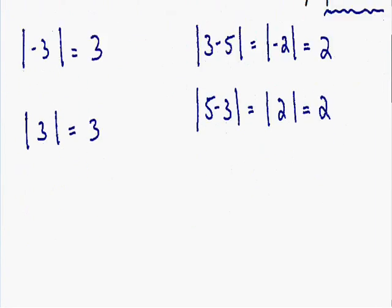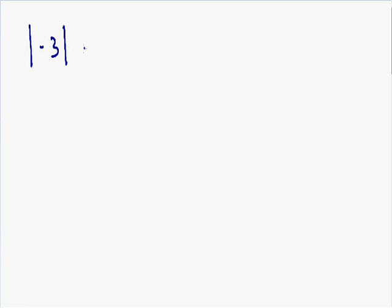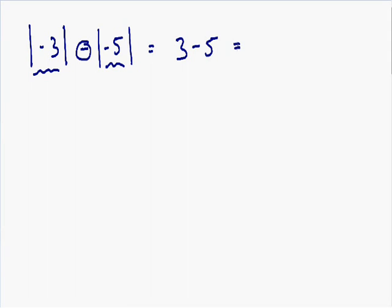Now let's go over some examples that are a little bit harder. Let's say we have the absolute value of negative 3 minus the absolute value of negative 5. Starting on the left, the absolute value of negative 3 is going to be positive 3. The negative sign outside the absolute value symbols just stays the same. The absolute value of negative 5 is going to be 5. So we have 3 minus 5, which is equal to negative 2. This is our solution.